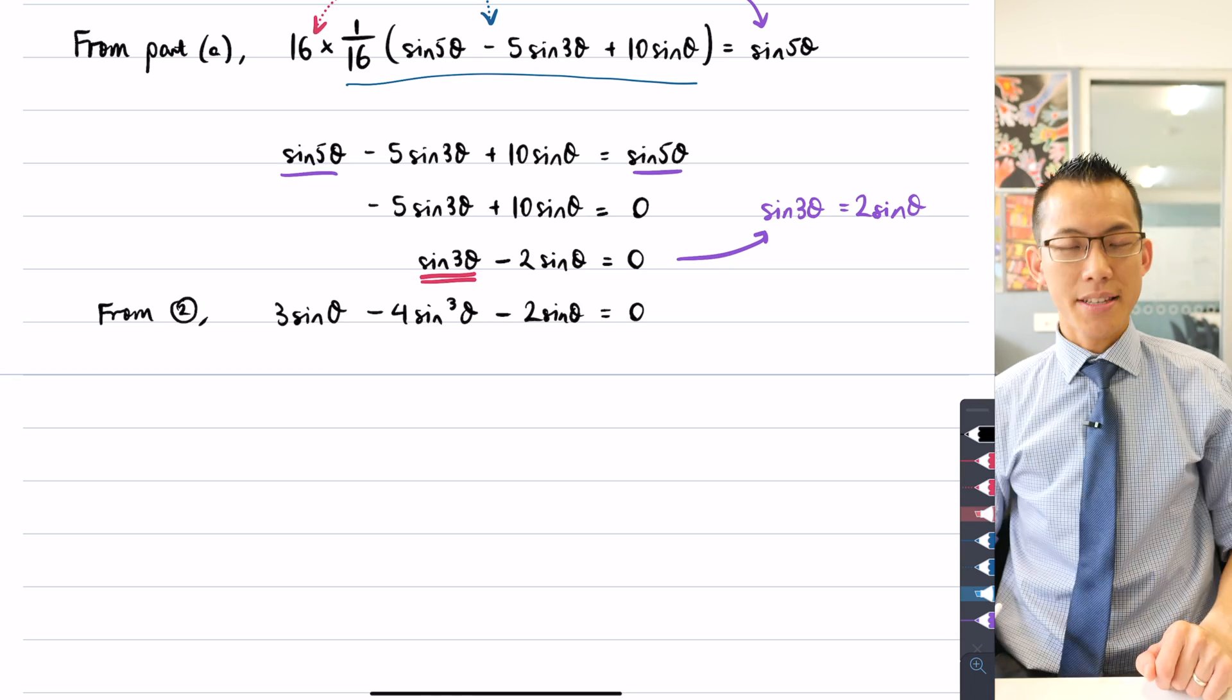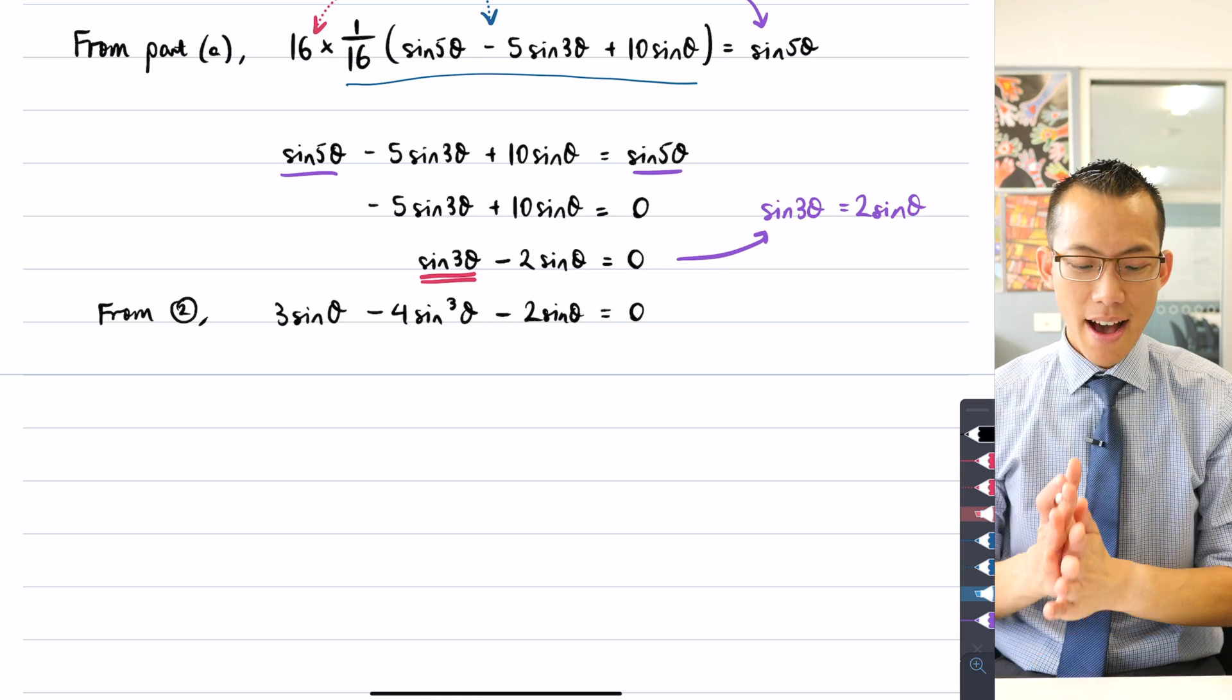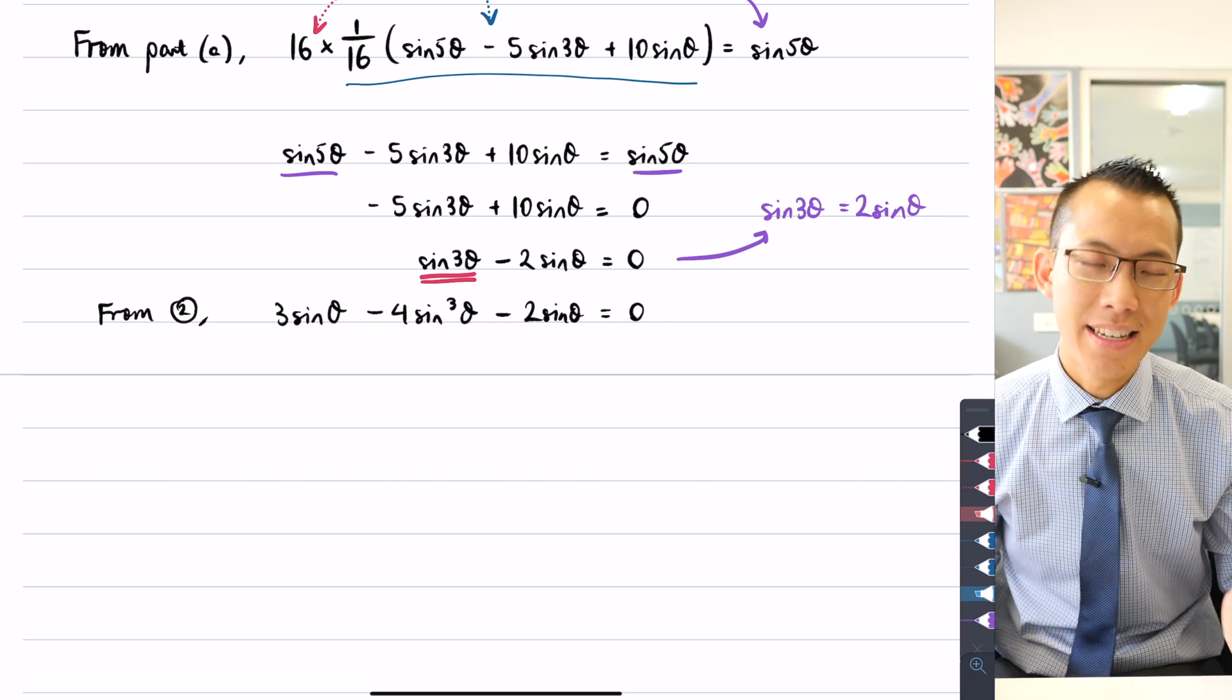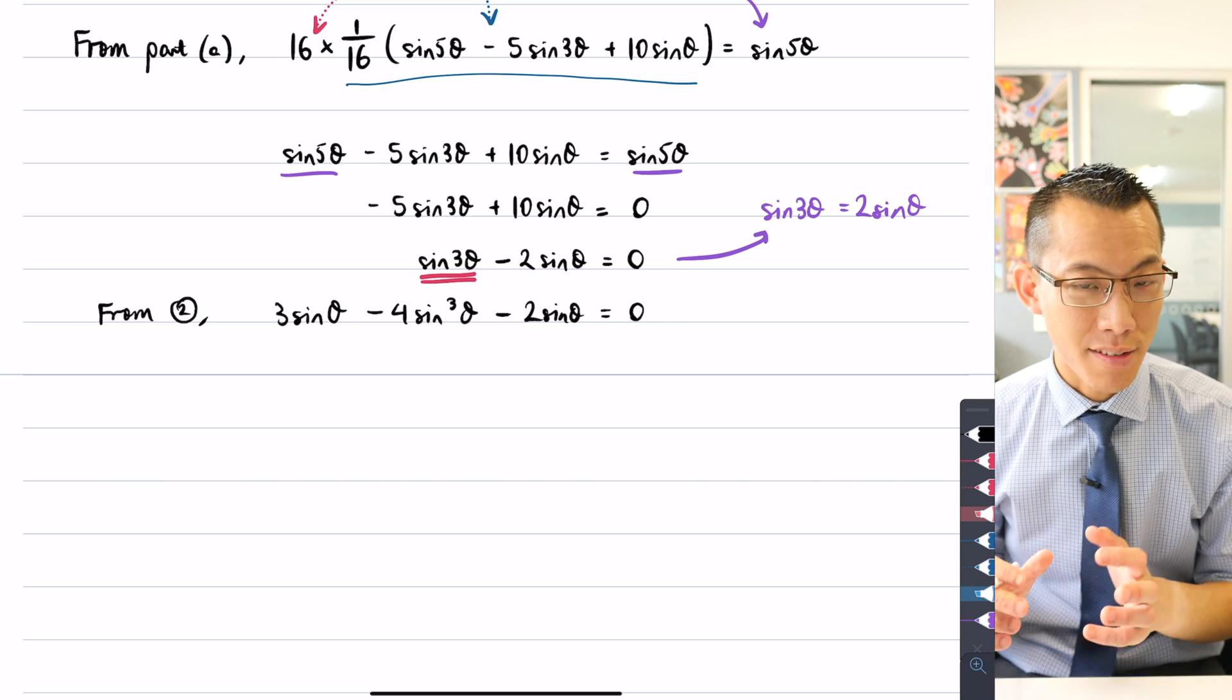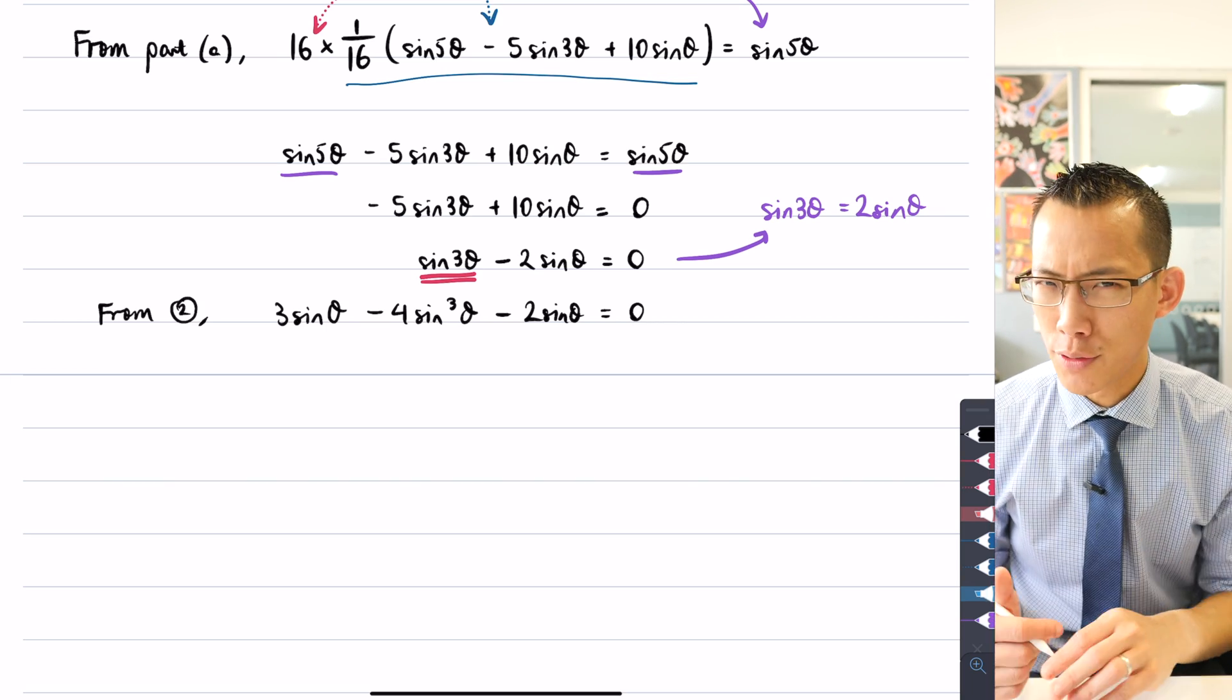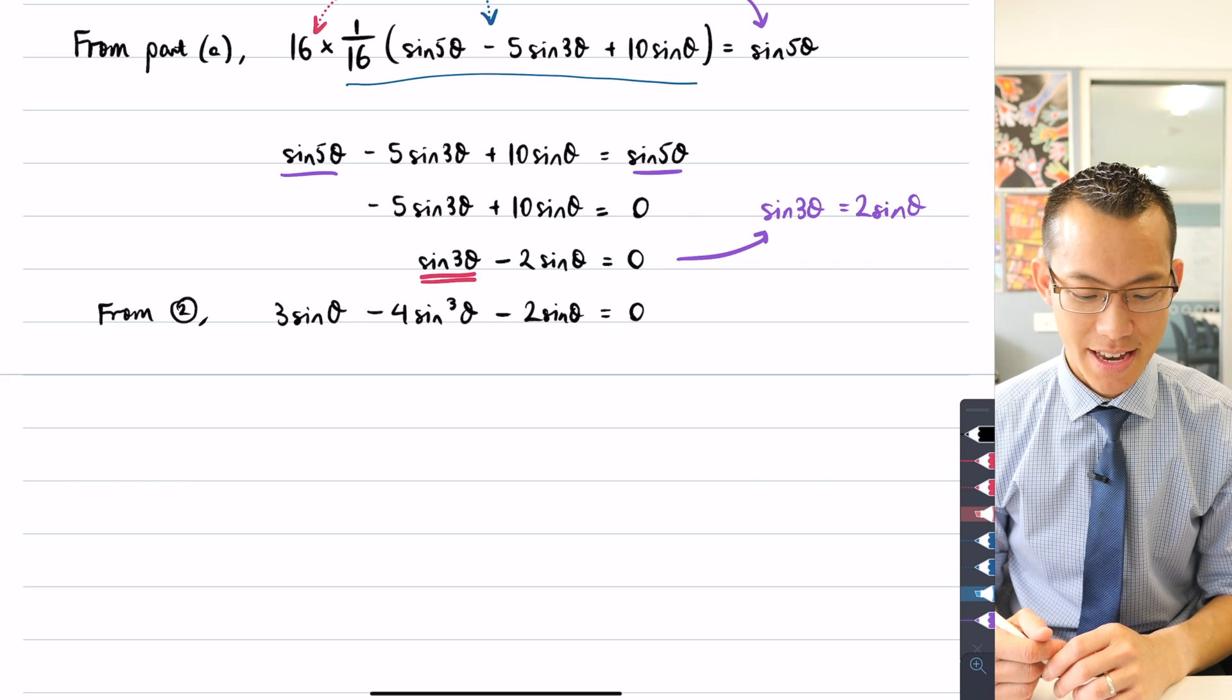I can say that's minus 2 sinθ. And the brilliance of doing this is I now have, even though it's a bit messy, I have an equation that is entirely in terms of sinθ. So it is very easy to deal with once I do some collecting of like terms and also some factorization.